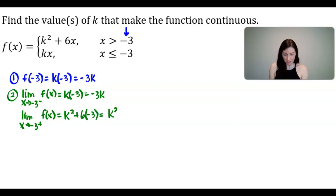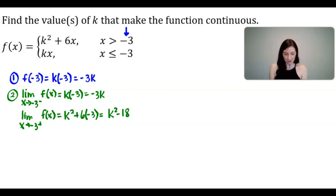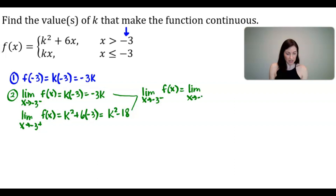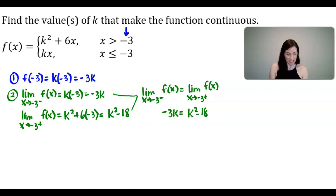We have K squared minus 18 from the right-hand limit. For the limit as x approaches negative 3 to exist — which we need for a continuous function — we set the left-hand and right-hand limits equal to each other. So we set negative 3K equal to K squared minus 18.